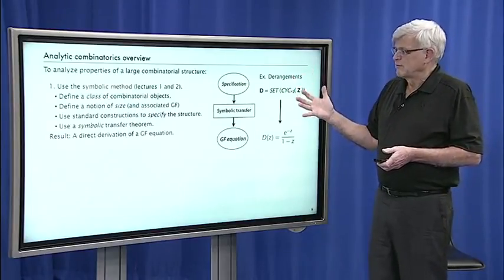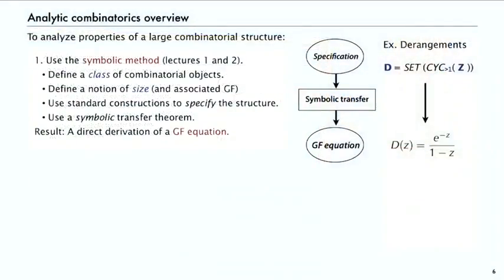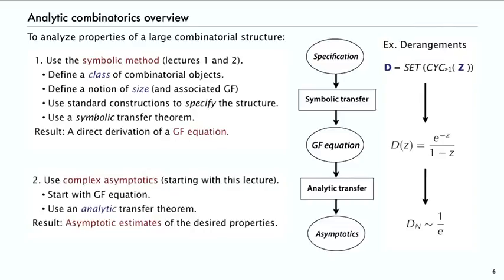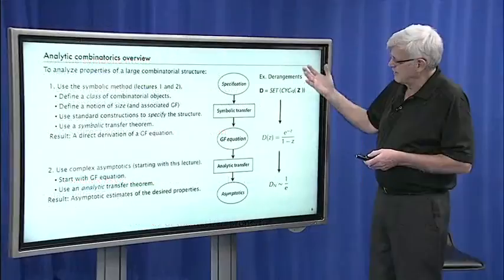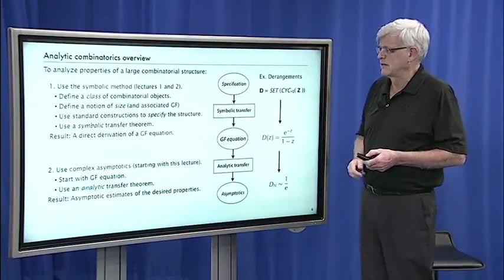Here's the overview of what we're going to be doing for the next several lectures. In the first part of the course we took a specification and used a symbolic transfer theorem to give us a generating function equation directly. In this part of the course, we take the generating function equation and develop analytic transfer theorems that immediately give us the asymptotic result. We'll see many examples where the derivation is as simple as: specify, transfer, transfer, asymptotic result.